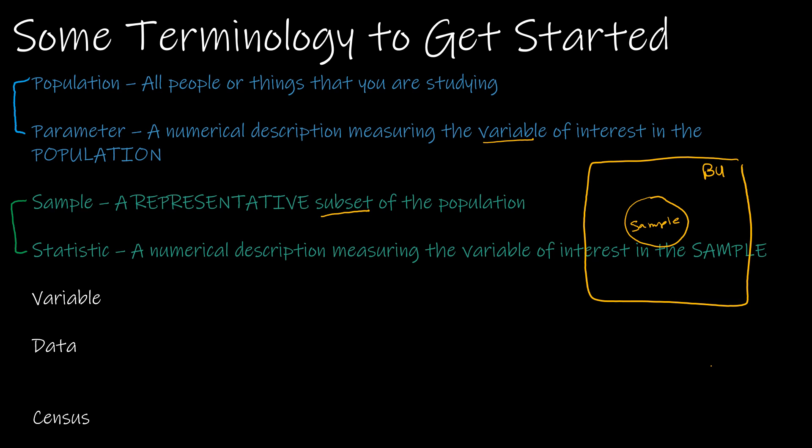Statistics is the entire course or the mathematical area of interest that we're studying. That's the difference between population with parameter and sample with statistic. Whatever it is that we are studying is called a variable.